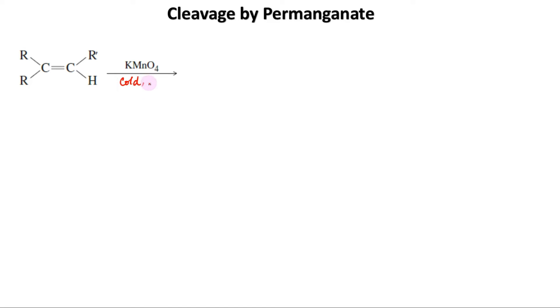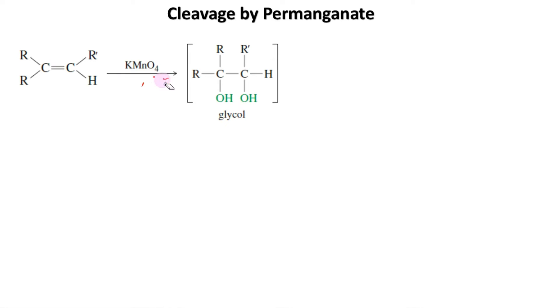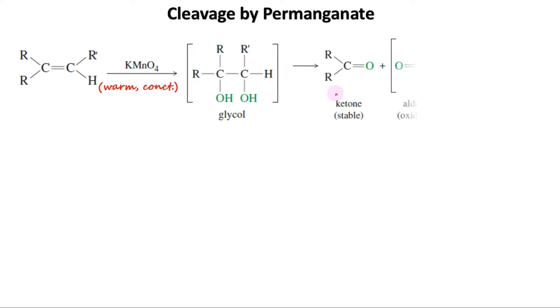We have seen that in a potassium permanganate dihydroxylation under cold conditions, syn-dihydroxylation takes place on the alkene double bond to form a glycol. However, if the solution is warm, acidic, or too concentrated, oxidative cleavage of the glycol may occur. In effect, the double bond is cleaved to give two carbonyl groups.